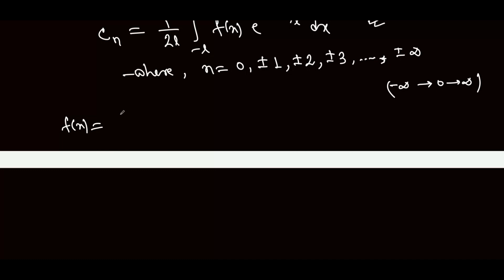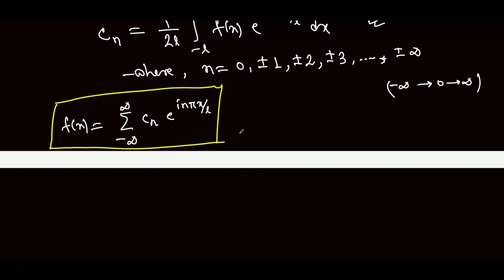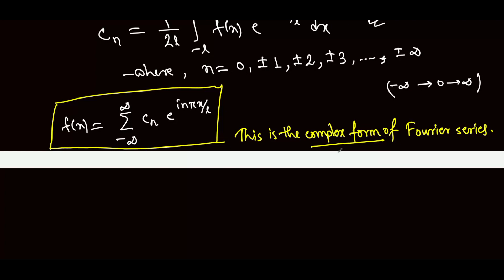Therefore, we can write the complex form of the Fourier series as: f of x equal to summation over n equal to minus infinity to infinity, cn e to the power of i n pi x by l. This is the complex form of the Fourier series. We will continue in the next video.